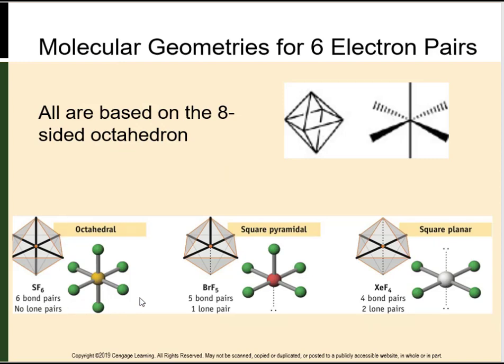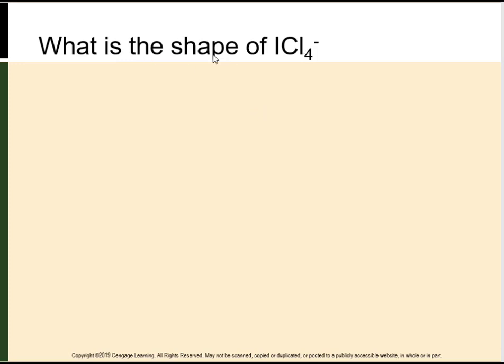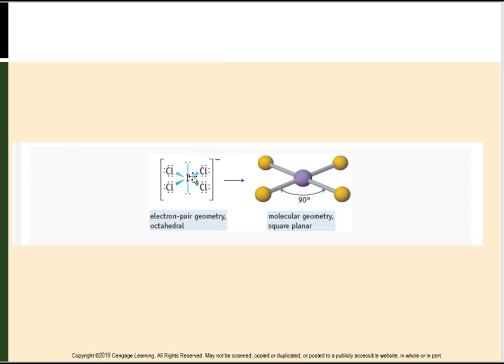We can also have an octahedral shape with six bond pairs and no lone pairs. Five bond pairs with one lone pair gives a square pyramidal shape. With four bonded pairs and two lone pairs, the shape is square planar. SF₆ is octahedral with all bonds at 90 degrees. Try drawing ICl₄⁻ as a Lewis structure — the two lone pairs are opposite each other, pushing everything to the sides, giving a square planar molecular geometry.